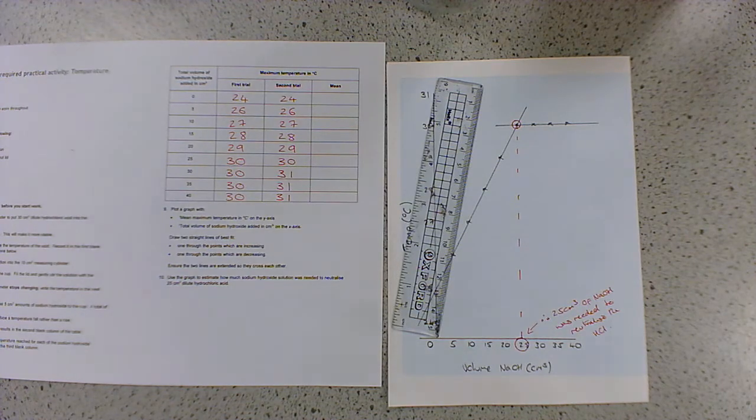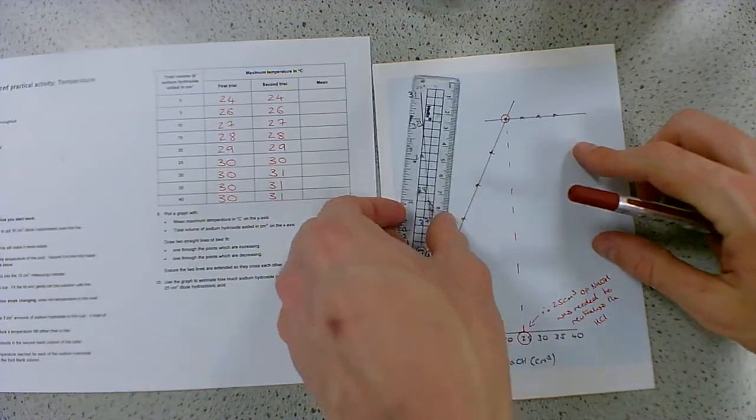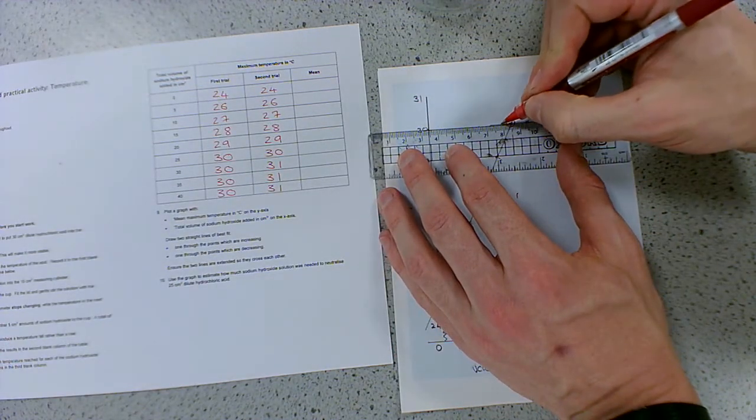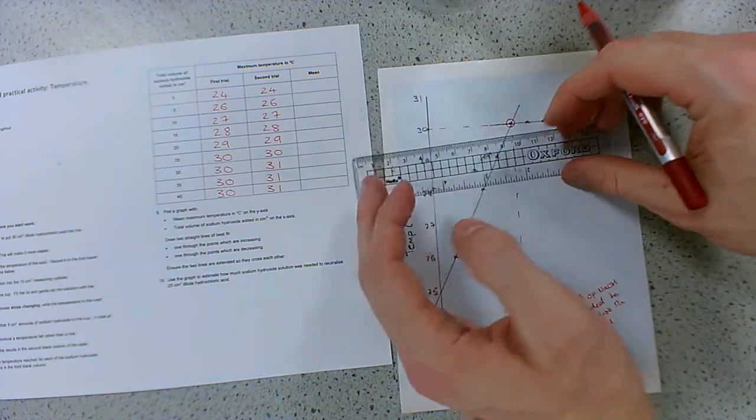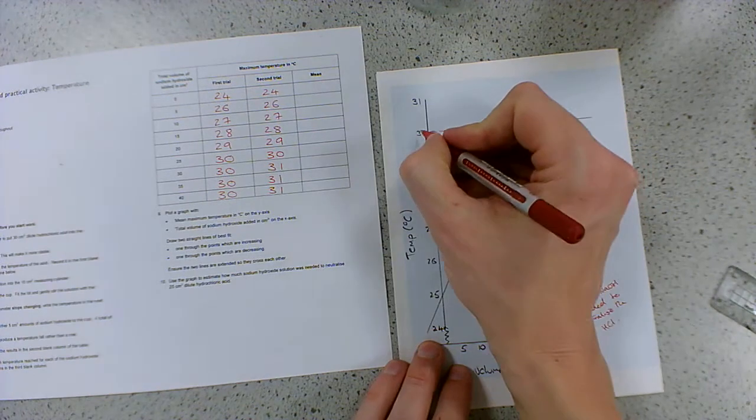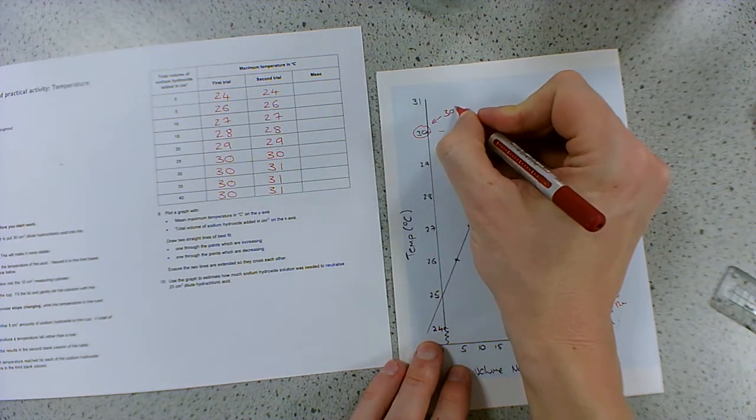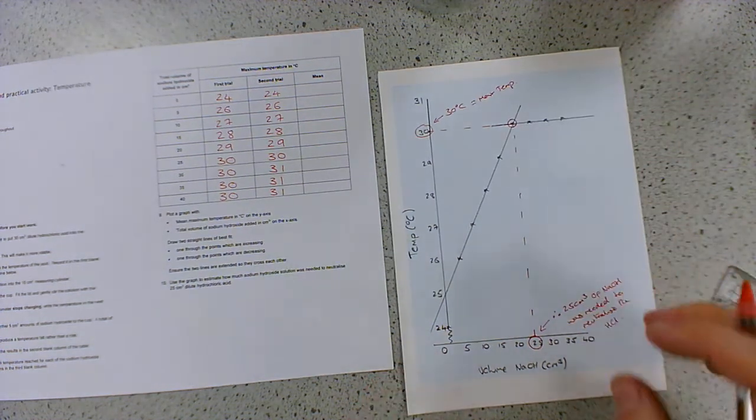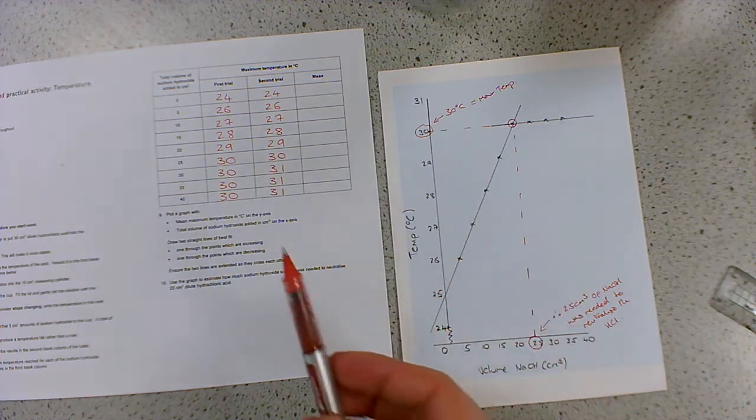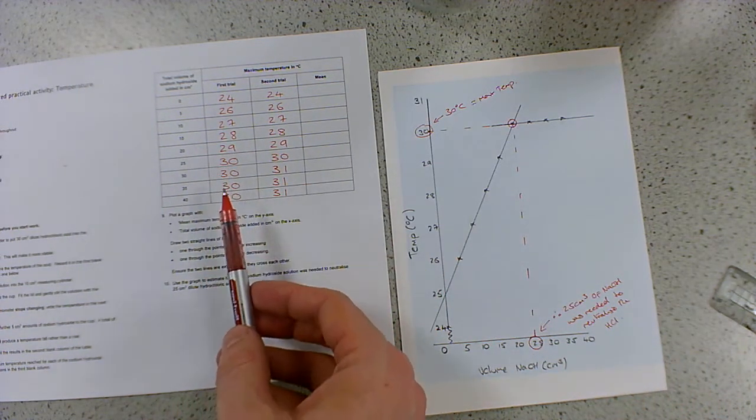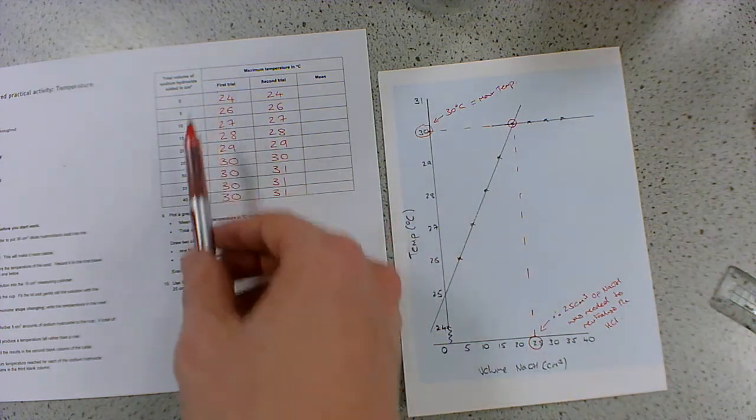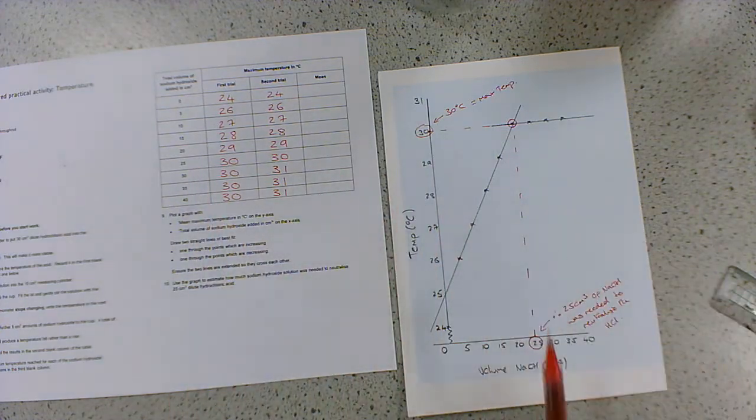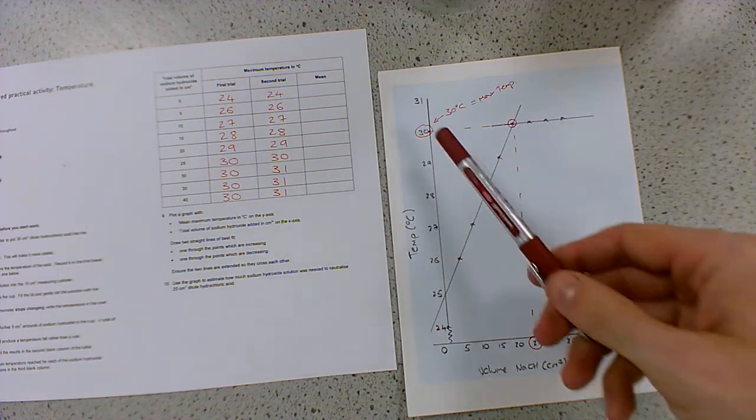Okay? The other thing we can get from the graph is we can actually work out what the maximum temperature change was. And that is just by doing the same thing and extrapolating across to the y-axis. In this case, the maximum temperature reached was 30 degrees. Now, again, we kind of already knew that because of the, from the experiment. Now, this data I've plotted here is just from trial one. Yours will be slightly different because you're plotting the average, okay? But if we were just plotting trial one, this is what it would look like.